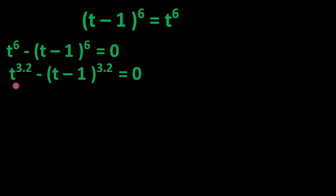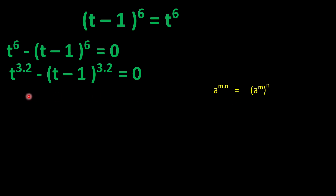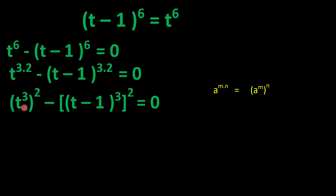We can rewrite this equation as (t^3)^2 - ((t-1)^3)^2 = 0, since 3 times 2 equals 6. According to the power-of-power rule, a^(m·n) = (a^m)^n, so we can write t^6 as (t^3)^2 and (t-1)^6 as ((t-1)^3)^2.